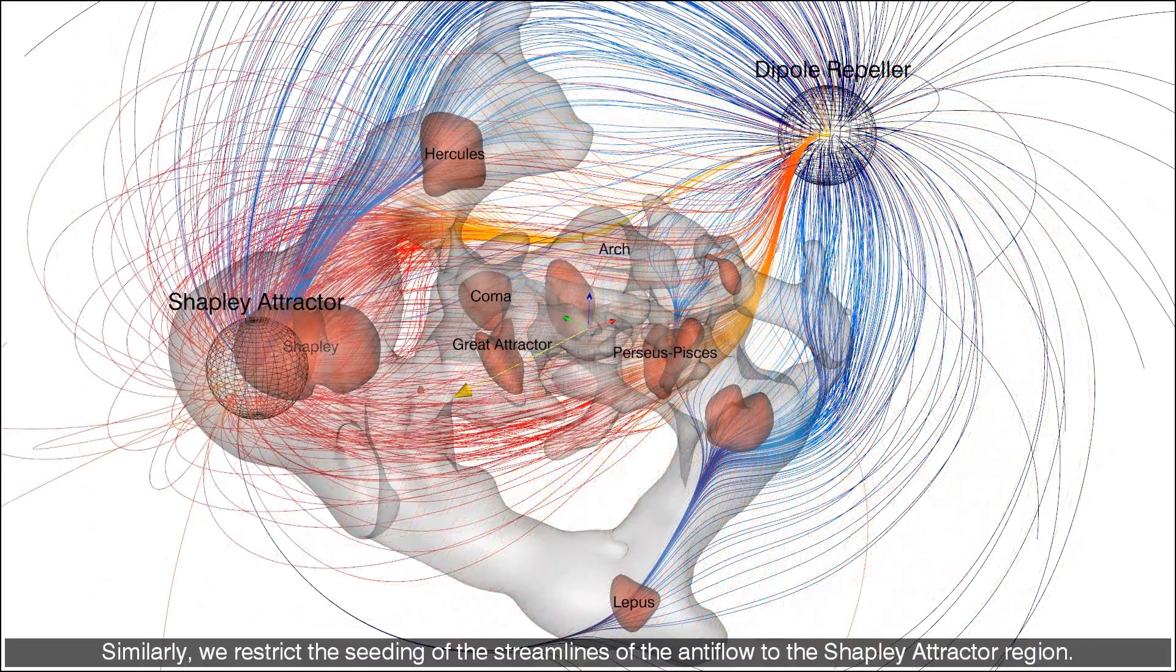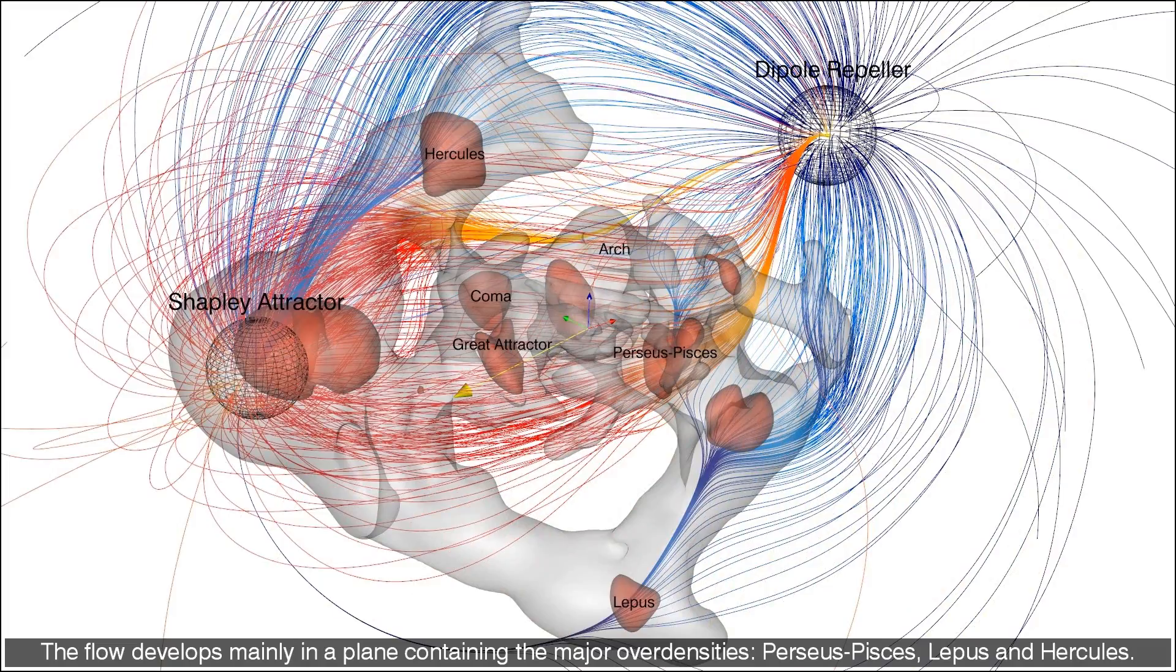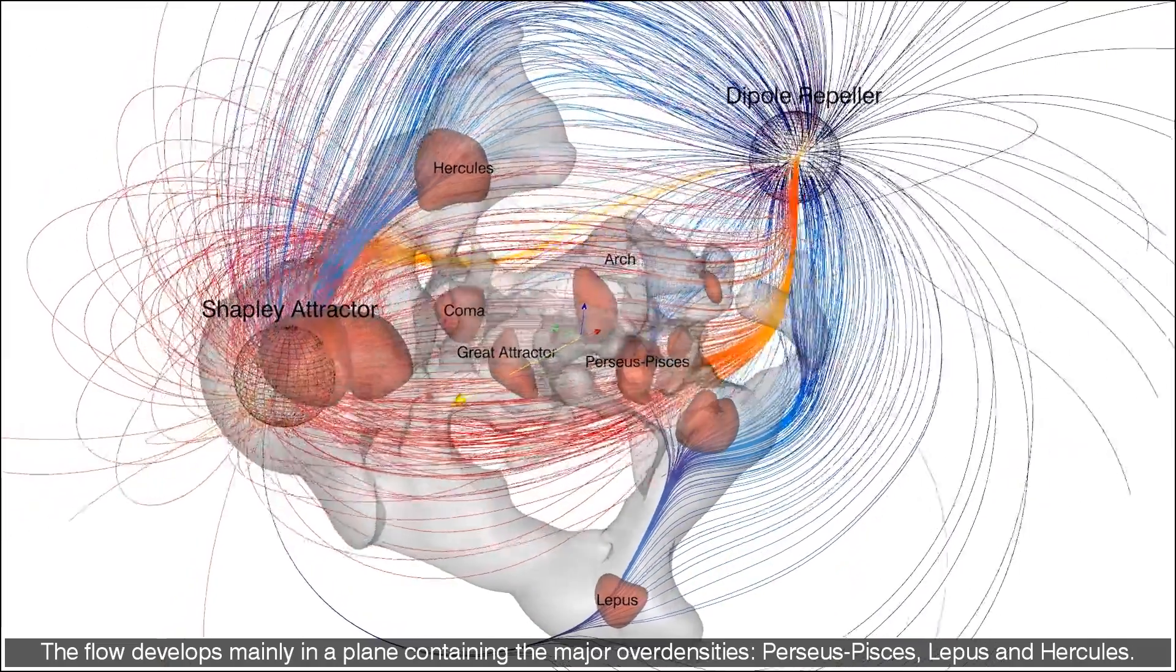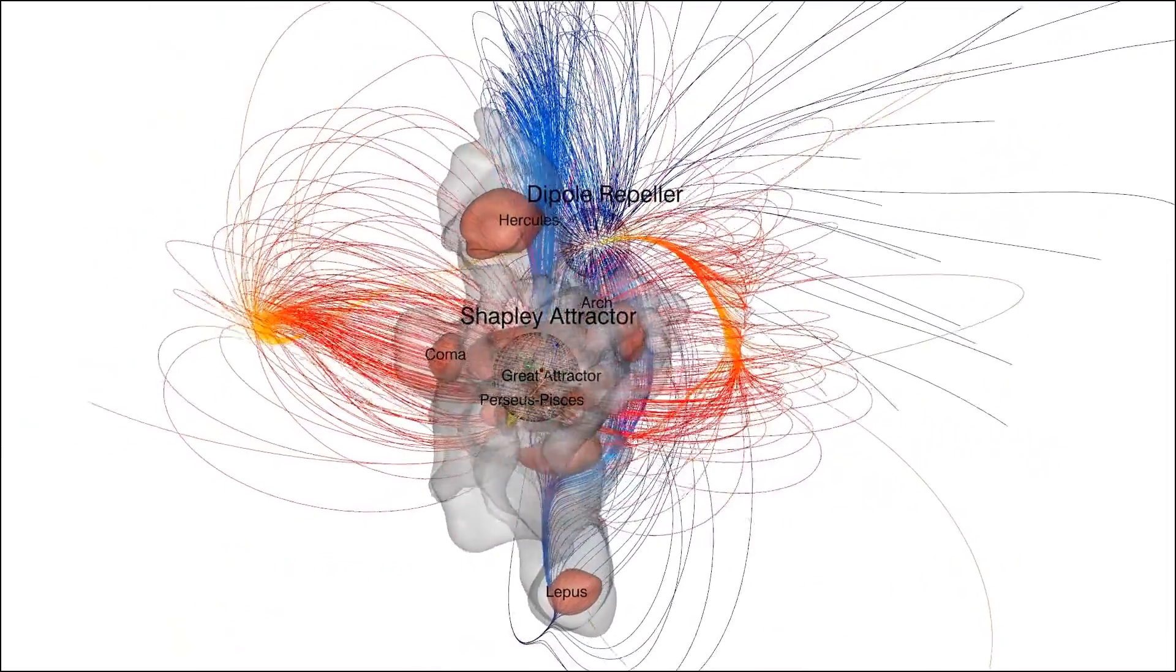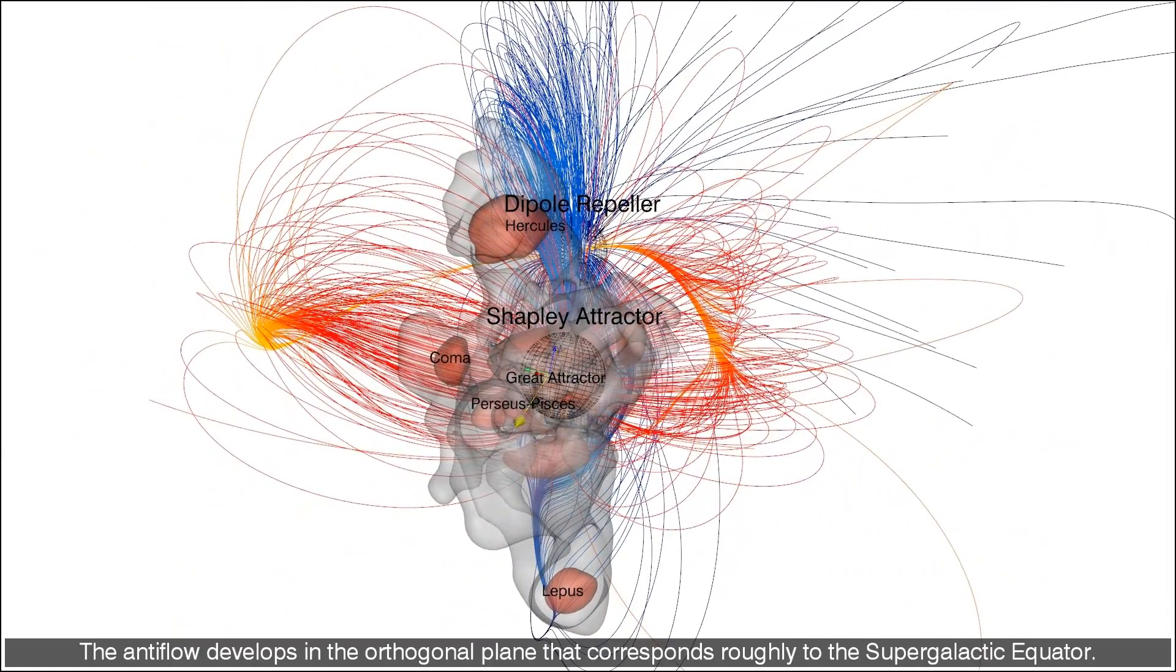Similarly, we restrict the seeding of the streamlines of the anti-flow to the Shapley attractor region. The flow develops mainly in a plane containing the major over densities: Perseus Pisces, Lepus and Hercules.